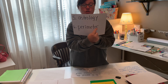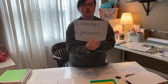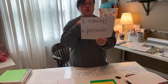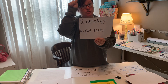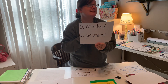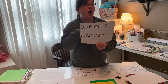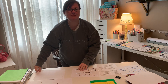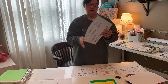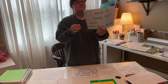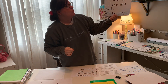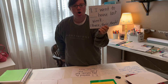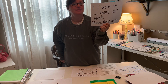'Perimeter' — 'meter' means to measure, and 'peri' means around. So perimeter means to measure all the way around. Number seven: 'I went to T-H-E-I-R house last week' — we need the possessive pronoun 'their.'